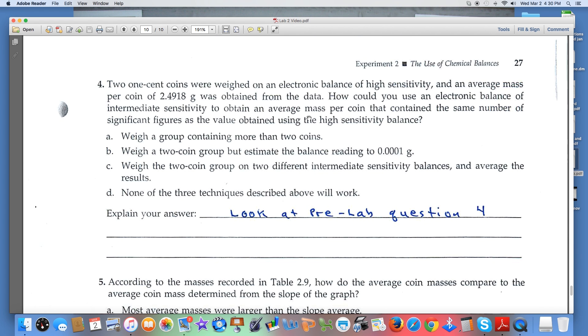Number four: two one-cent coins were weighed, we got an average mass. How could we use an electronic balance of intermediate sensitivity to obtain an average mass per coin that contained the same number of significant figures using this high sensitivity balance? The key to question four is to look back at pre-lab question four, and that'll give you a big hint.